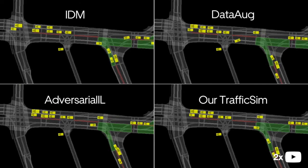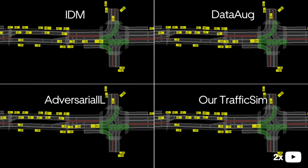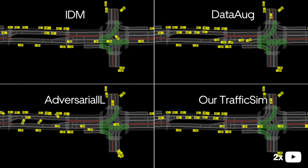Here we see that the heuristic-based IDM model also avoids collision and follows traffic rules. However, the actor behavior it generates is a lot more rigid and unrealistic compared to our model.